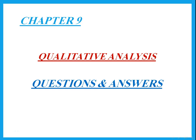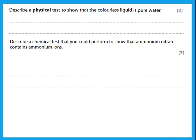These are the questions and answers on quantitative analysis. The first question: describe a physical test to show that the colorless liquid is pure water. The physical test for water is to heat it to boiling — it should boil at 100 degrees Celsius.